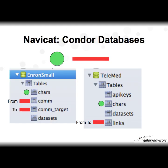If you use NaviCat and click on one of the Condor databases, for example the Enron small, you're going to see tables. The chars table is the node, the from link is in the com table, and the to is in the com target. For a website like Telemed, the chars are going to be the URLs, and the links are going to be in the link table, going from one link to another. So that's the connection there.